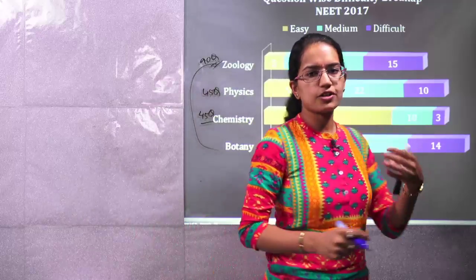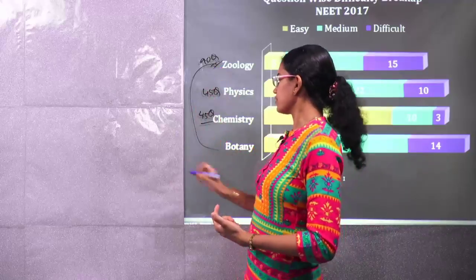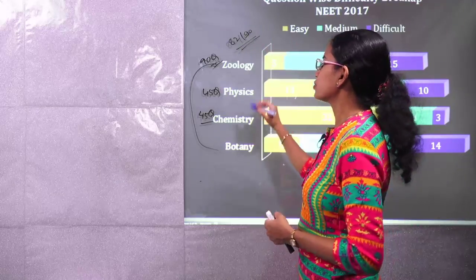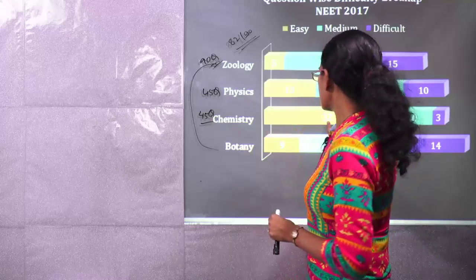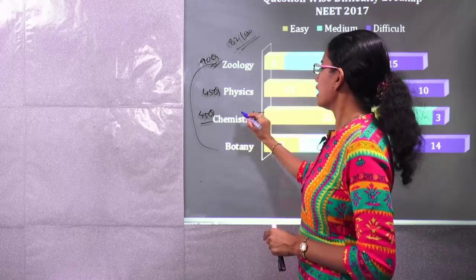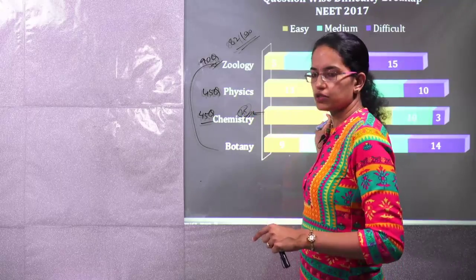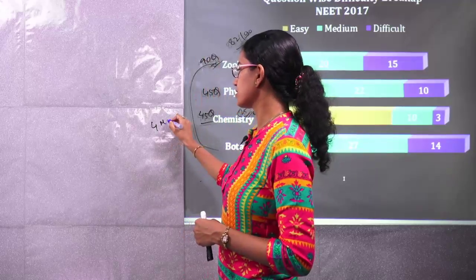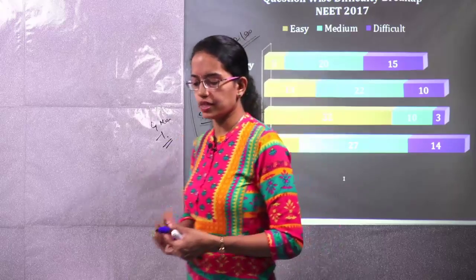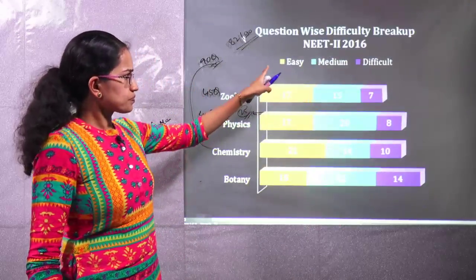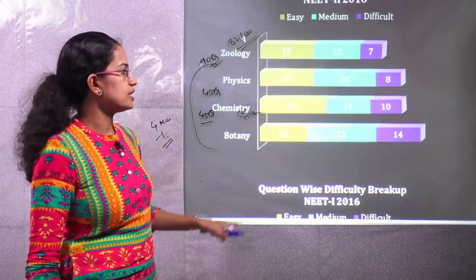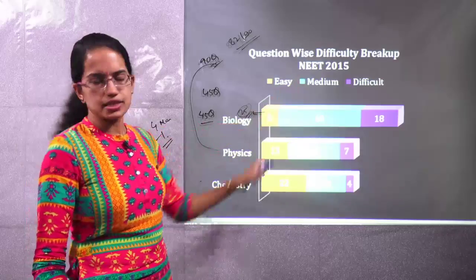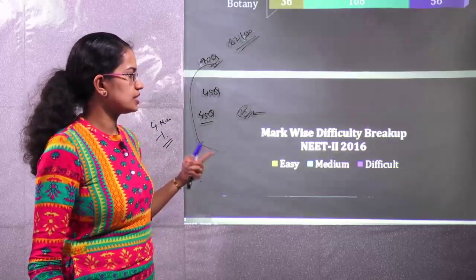Many seniors or professors say prepare well with biology and scoring around 82 out of 90 ensures a good admission even with average scores in physics and chemistry — but that's not the case. Out of the 32 easy chemistry questions, if you solve at least 25, you are sure to score very well. Have a target of around 600 plus. Every question has 4 marks weightage and a negative marking of 1 mark for each incorrect answer. Chemistry has consistently been easy over 2015 and 2016 as well, so preparing chemistry well will be very scoring for you.